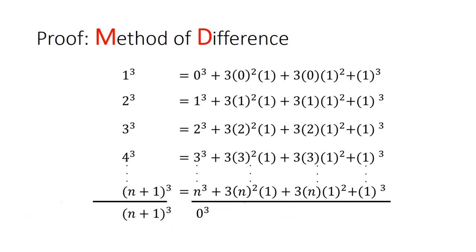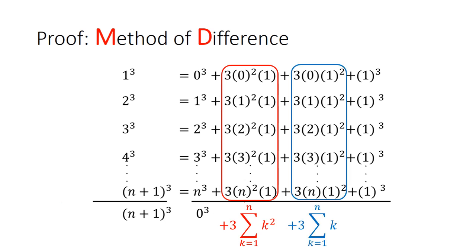But we are not done. There are 3 more sets of terms we still need to collect. The next column circled in red, that's just 3 times the sum of squares. The next column circled in blue, that's just 3 times the sum of natural numbers from 1 to n. And in the last column, that's just 1 plus 1 plus 1 plus 1, n plus 1 times. Since both sides must be equal, our aim here now is to make the sum of squares the subject.